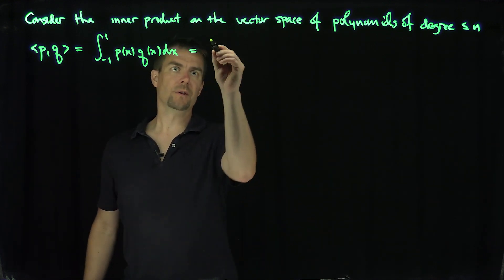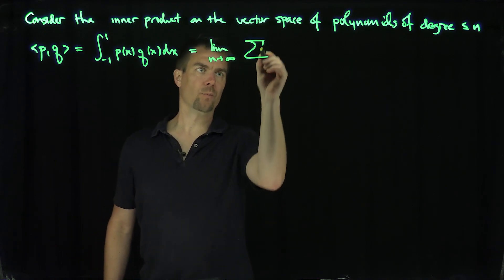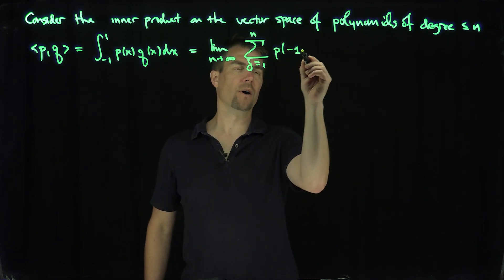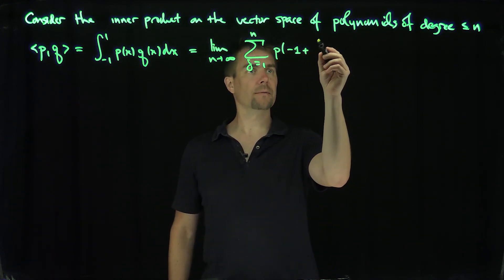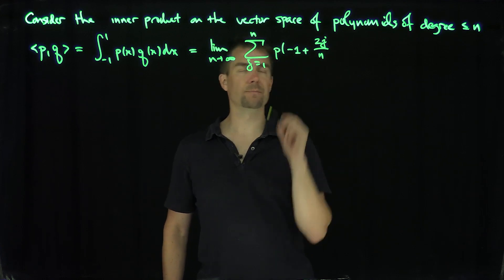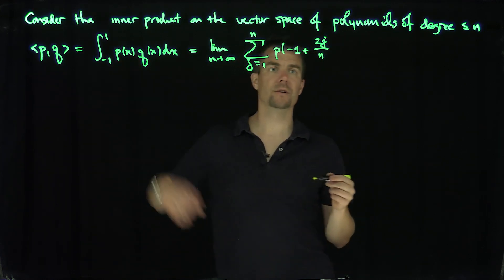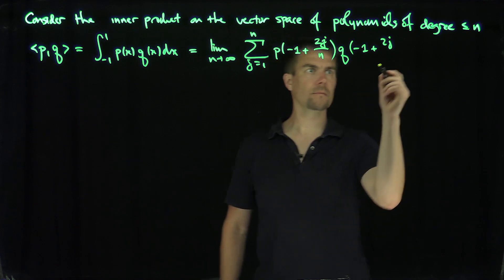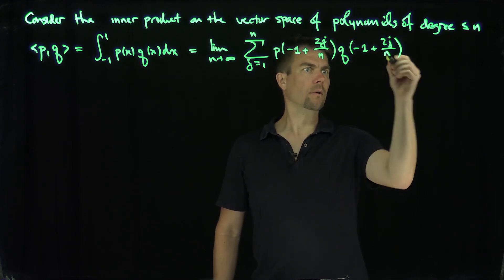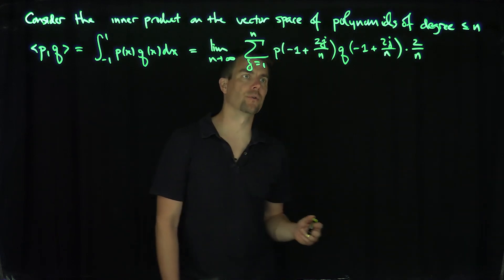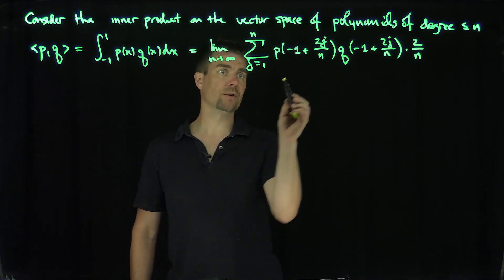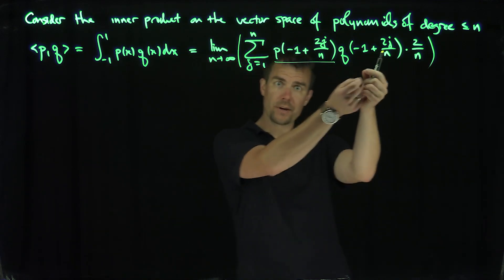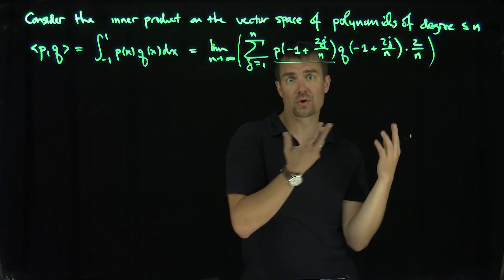This is going to be the limit as n goes to infinity of the sum, j goes from 1 to n, of p(−1 + 2j/n) times q(−1 + 2j/n) times 2/n, where our starting point is negative 1, the interval length is 2, and 2/n is just a scaling factor.